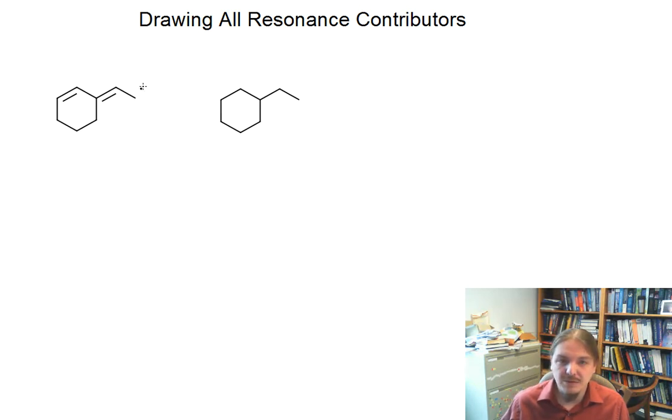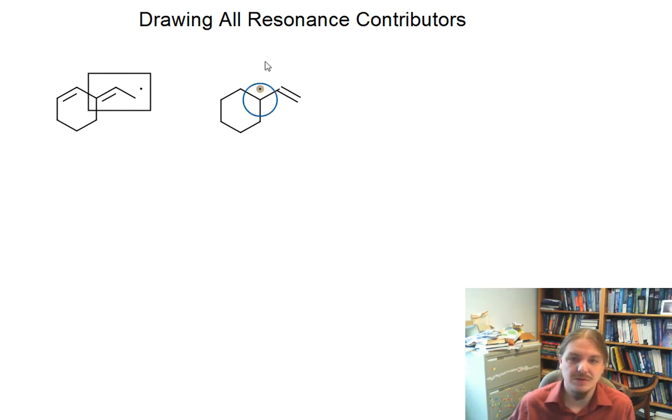The second thing I might want to do is look for allyl radical systems and I have one in this particular structure and I've just drawn a square around it. And if you've internalized what happens to allyl systems in resonance, that the double bond swaps to the other carbon-carbon bond, and then what's ever at one end swaps to the other, you might be able to use that right away to draw the other resonance contributor to this radical.